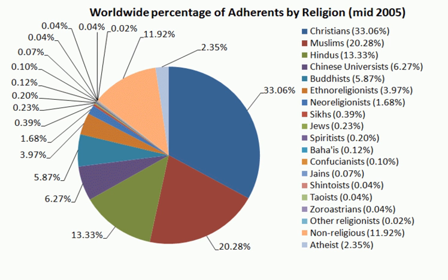The late Vedic period marks the beginning of the Upanishadic or Vedantic period, heralding the beginning of much of what became classical Hinduism, with the composition of the Upanishads, later the Sanskrit epics, still later followed by the Puranas. Upanishads form the speculative philosophical basis of classical Hinduism and are known as Vedanta. The older Upanishads launched attacks of increasing intensity on ritual. Scholars believe that Parsva, the 23rd Jain Tirthankara, lived during this period in the 9th century BCE.